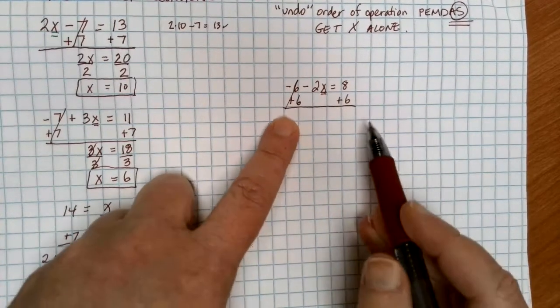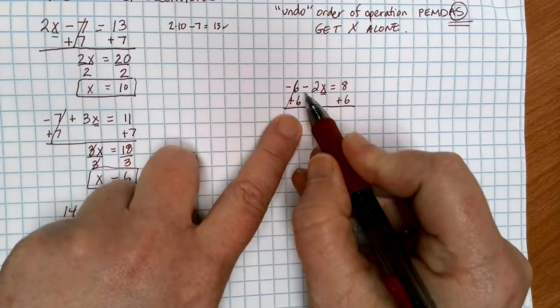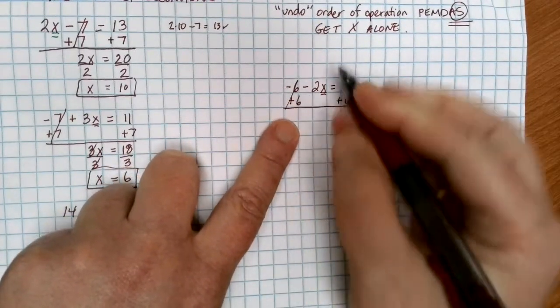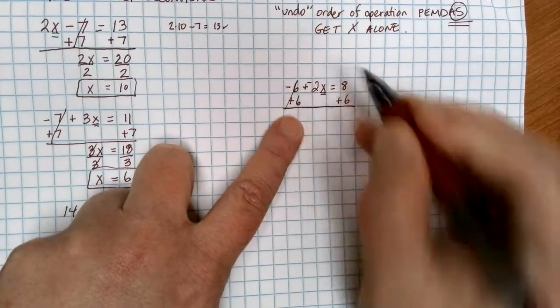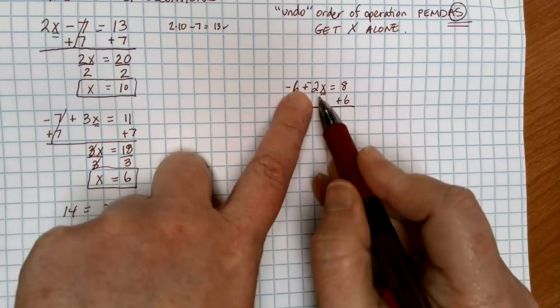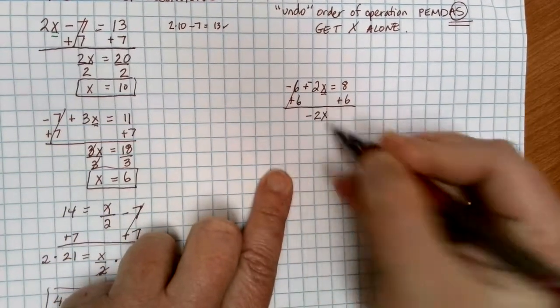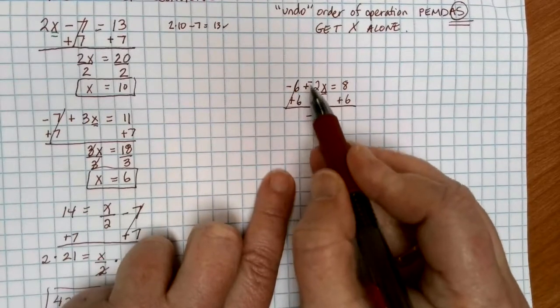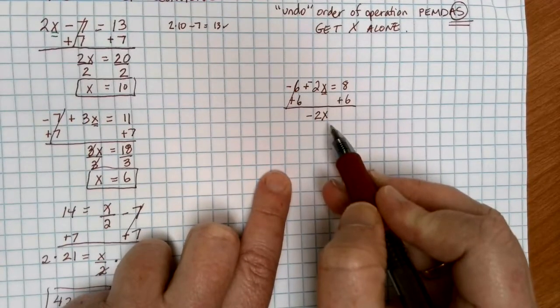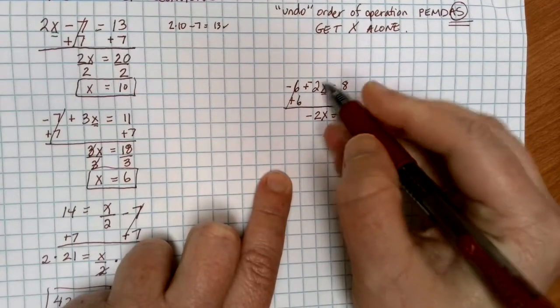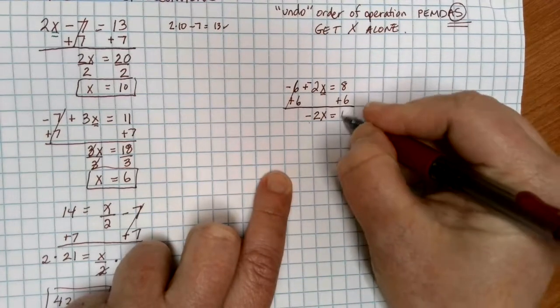This is where people often make a mistake. Once the 6s are gone, there was a subtraction there. What we really need to do is think of this subtraction. This was the same as adding a negative. So what I'm really left behind here isn't 2x. I'm left with negative 2x. So it's important to keep the sign of whatever was in front as you continue through your different operations. In this case, that left us with a minus 2x, a negative 2x. On the other side, 8 plus 6 gives me 14.